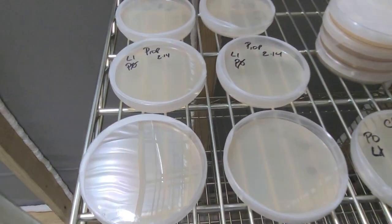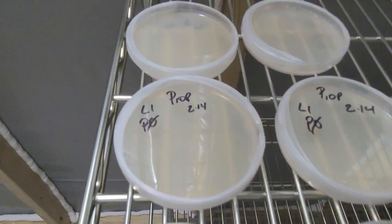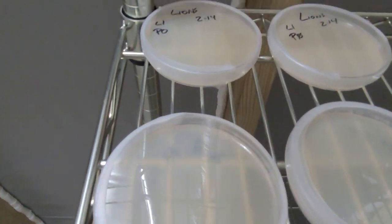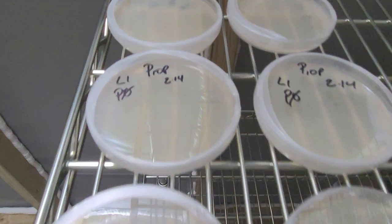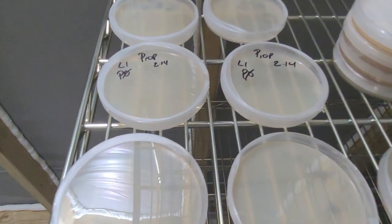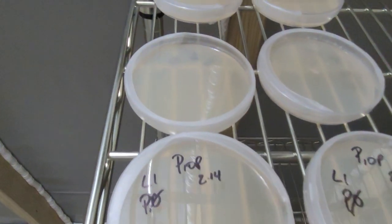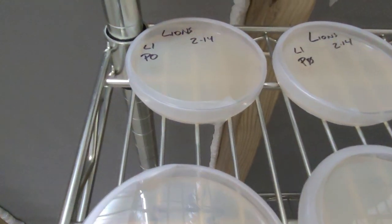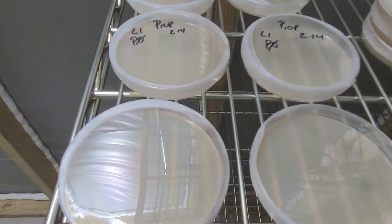In this case, these plates are made with potato dextrose and is likely a different food source than what they were cultured in, which was, if I had to guess, malt extract or honey water. The introduction of a new food source has the potential to slow initial growth, at least until the mycelium has figured out how to digest the new nutrient.